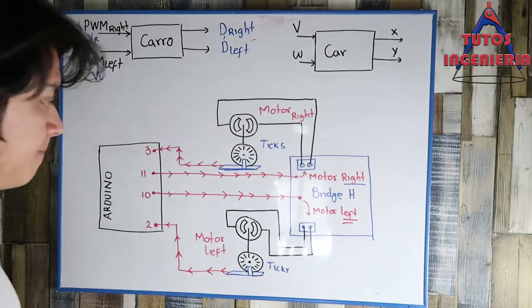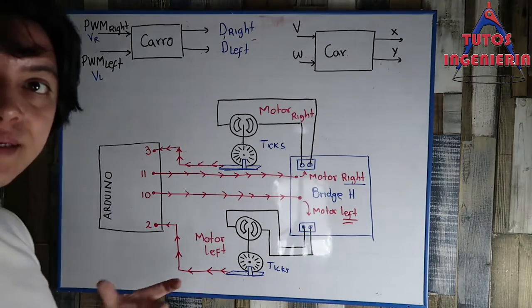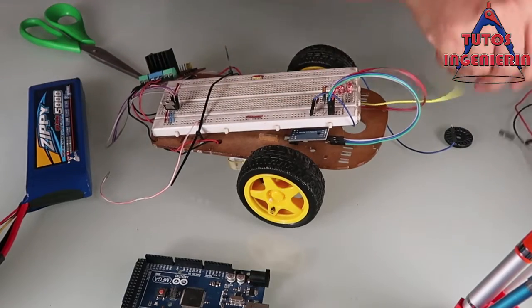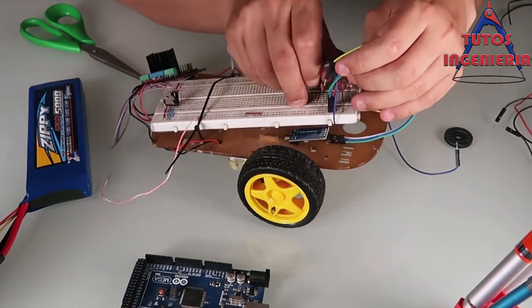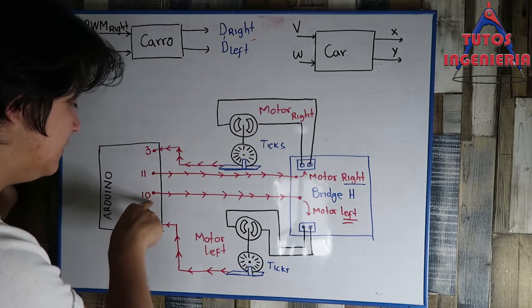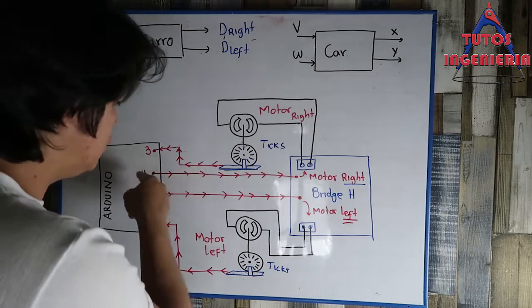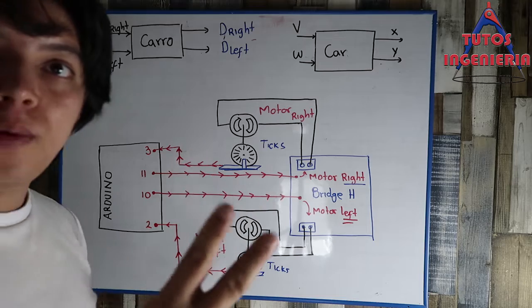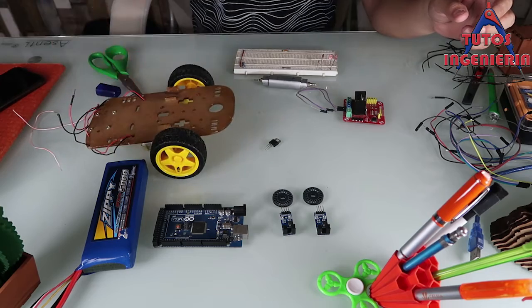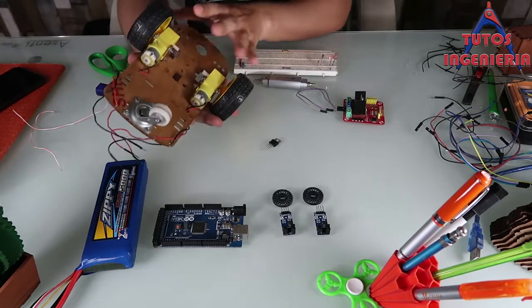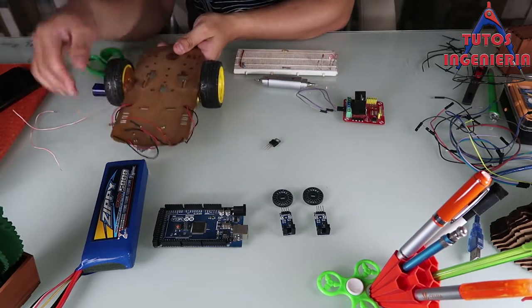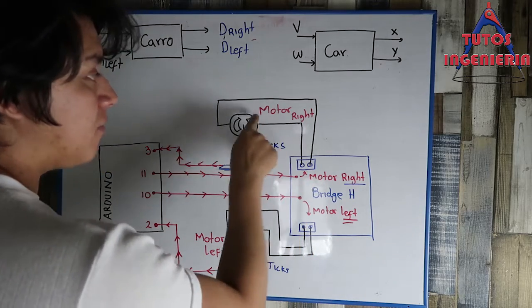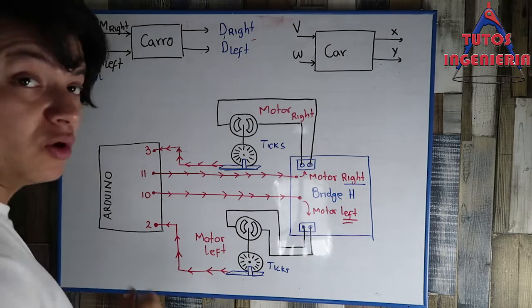The brain of our project is an Arduino — a microcontroller. That microcontroller sends signals, in this case on pin 10 and pin 11. Those pins make the motors move. We need two pins because there are two motors: pin 11 moves the right motor and pin 12 moves the left motor.